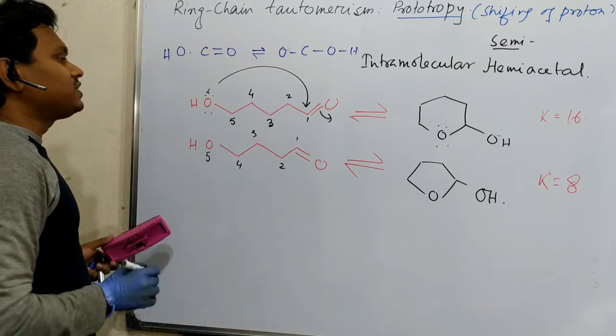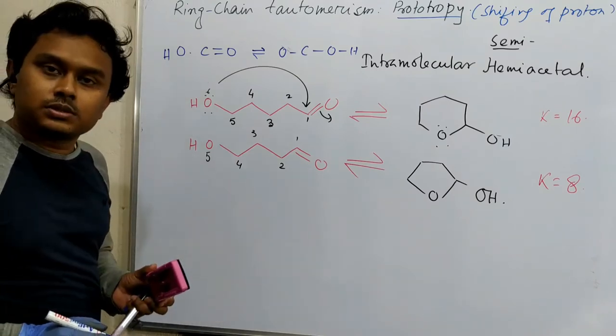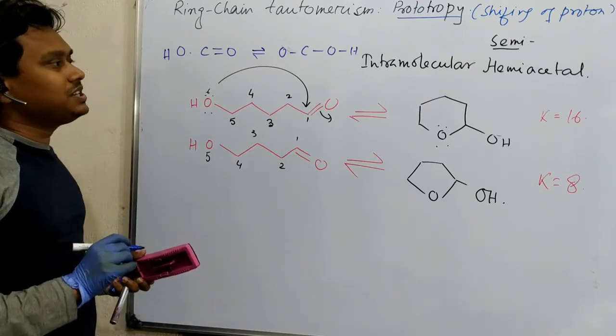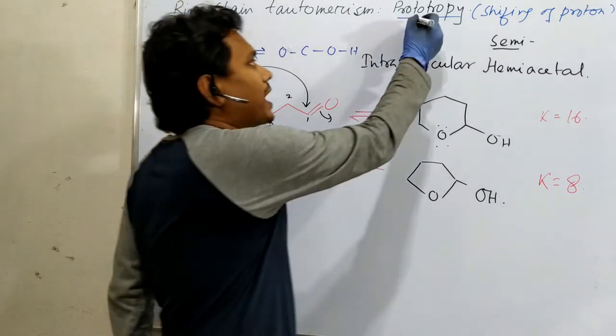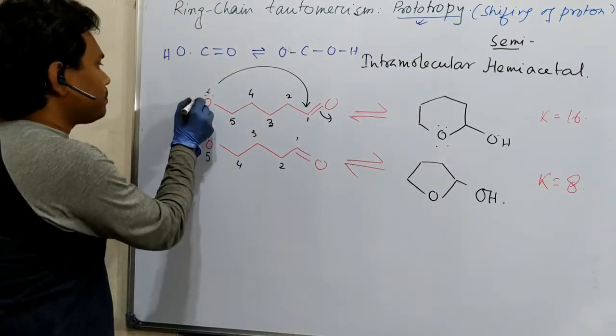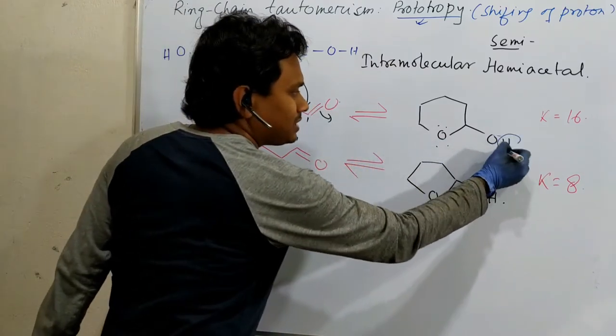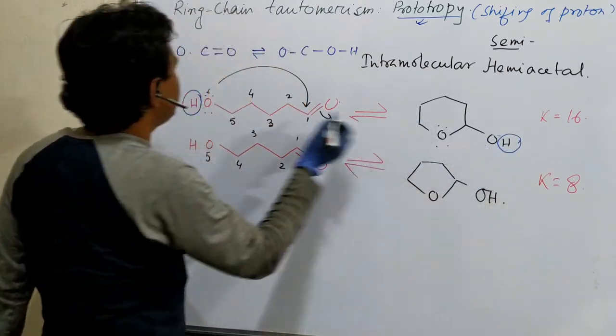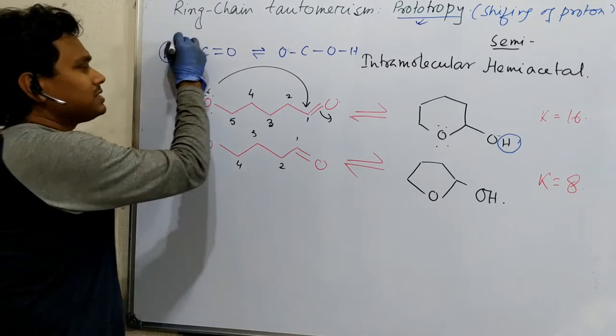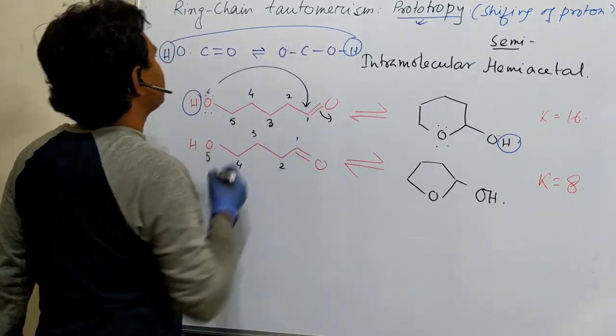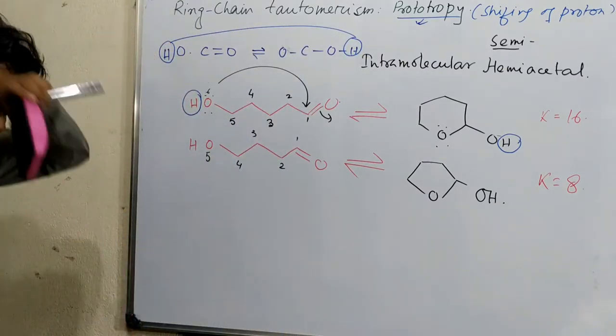Now, question is, I have given you two examples. So, actually, this is intramolecular hemiacetal. Actually, why this is prototropy? See, the proton from here is shifted to this. So, ultimately, this is. So, from here to here shifting. And in this case, see, the proton is here shifted from here to here.